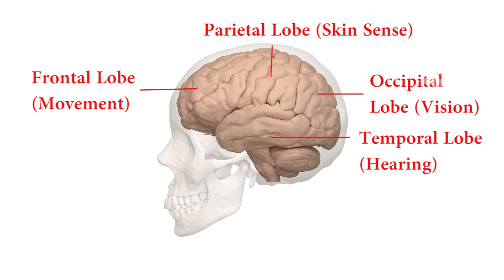The frontal lobe is the outer covering of the cerebral hemisphere — the cerebral cortex. It is the front area of the central fissure and occupies the area nearest the face. This area is concerned with body movement.